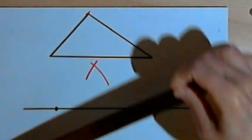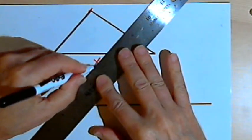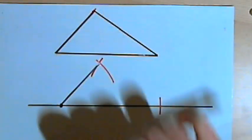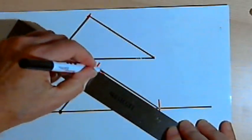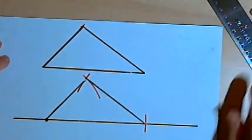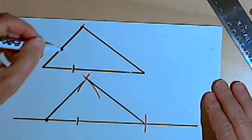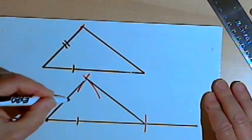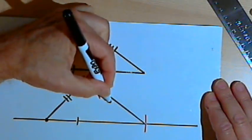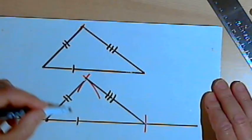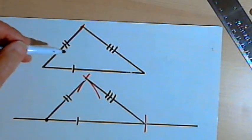And now I've just got some points to connect. So I've got my original triangle. I copied the base down here onto the line that I drew. I copied one of the sides onto the new triangle, and I copied the third side onto the new triangle. So the three sides are congruent. That means I've got two congruent triangles. And that's all there is to it.